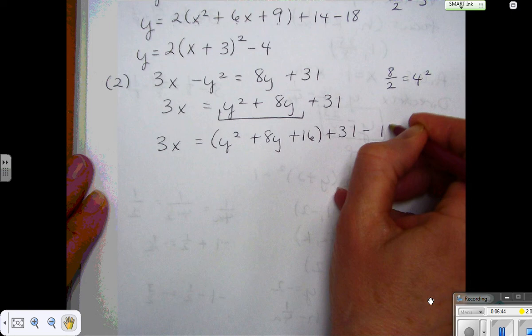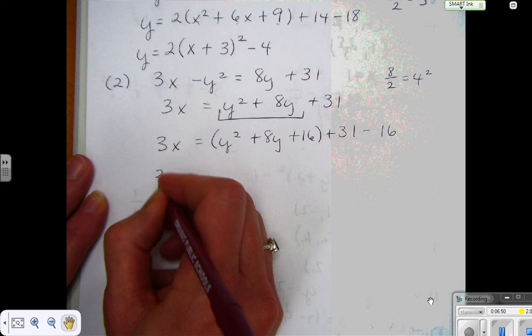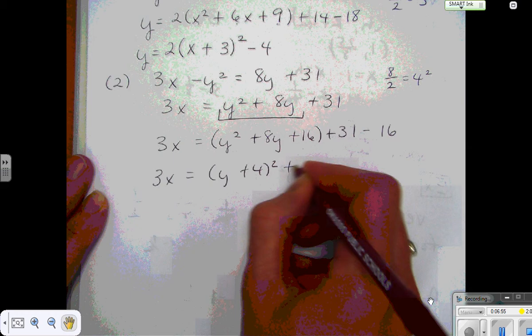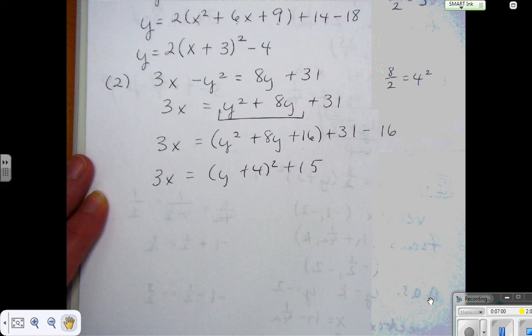Okay, so I can factor the trinomial, combine my like terms. I have 3x equals y plus 4 squared plus 15. Okay, so it's almost in standard form, and this is where I want to divide everything by the 3 now, so it'll just be x all by itself. Okay, so the 3s reduce out and you have x equals.